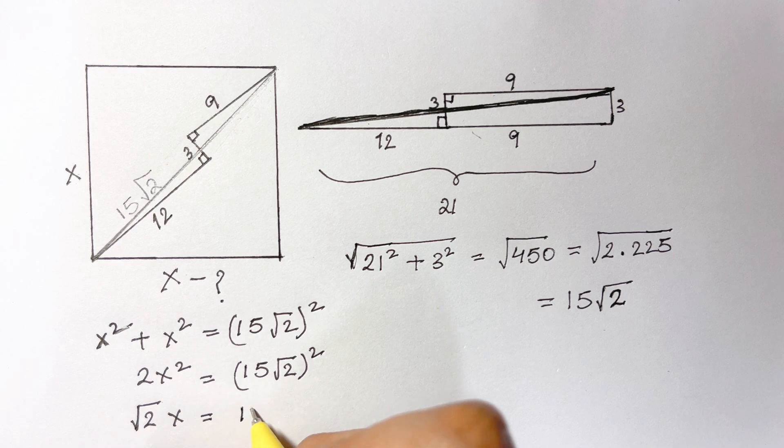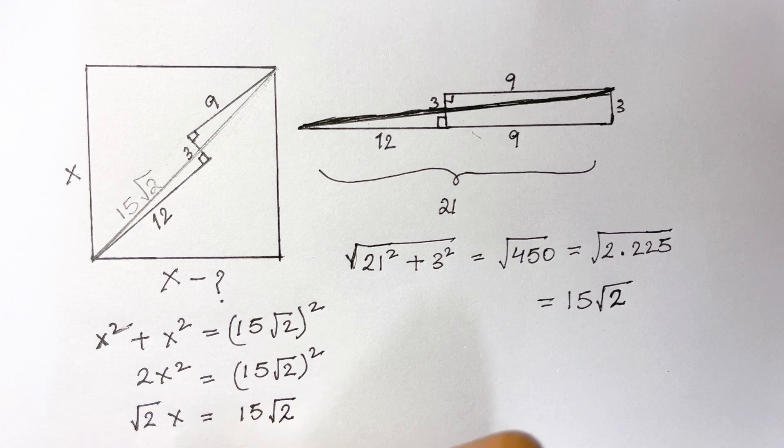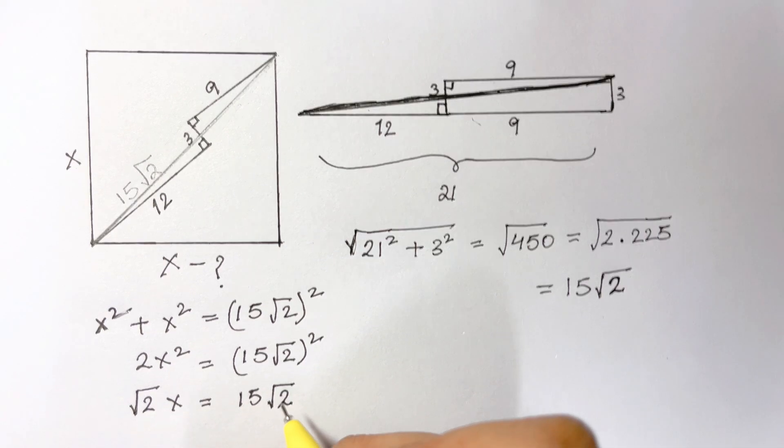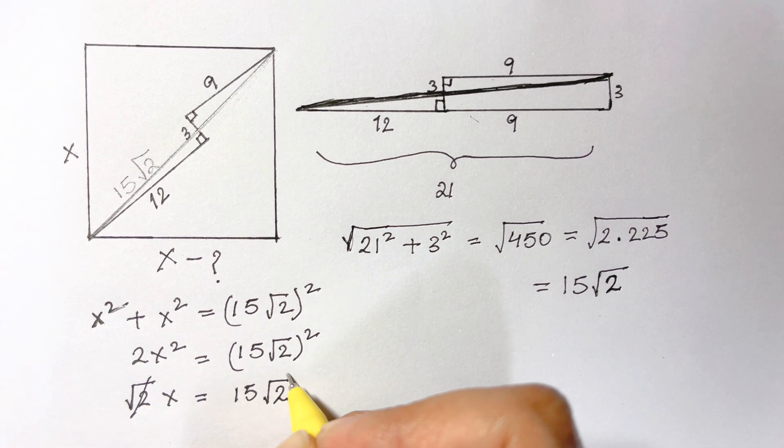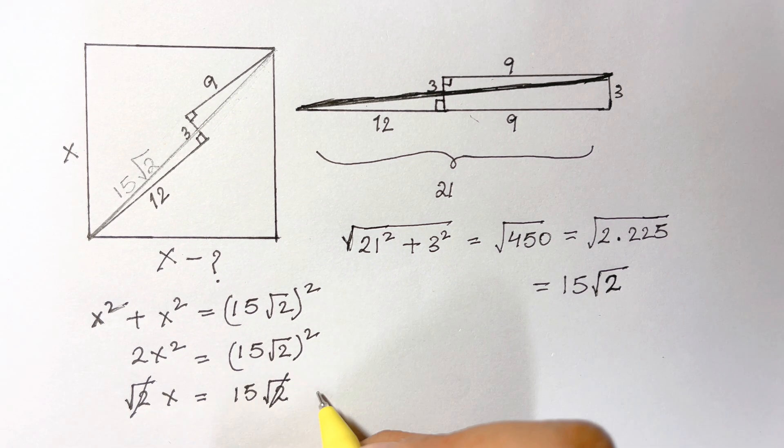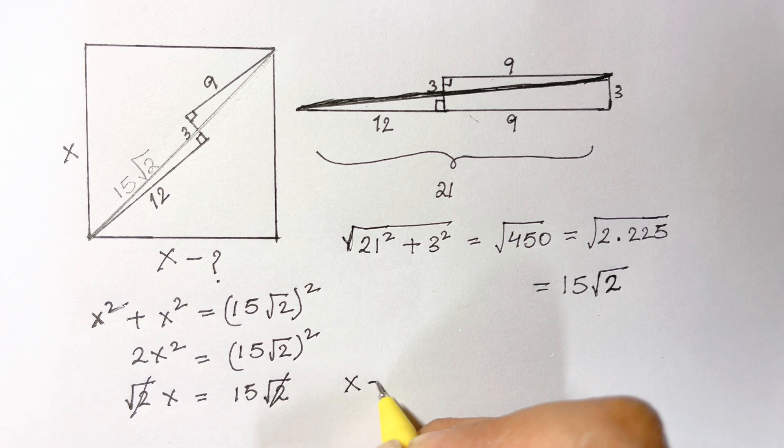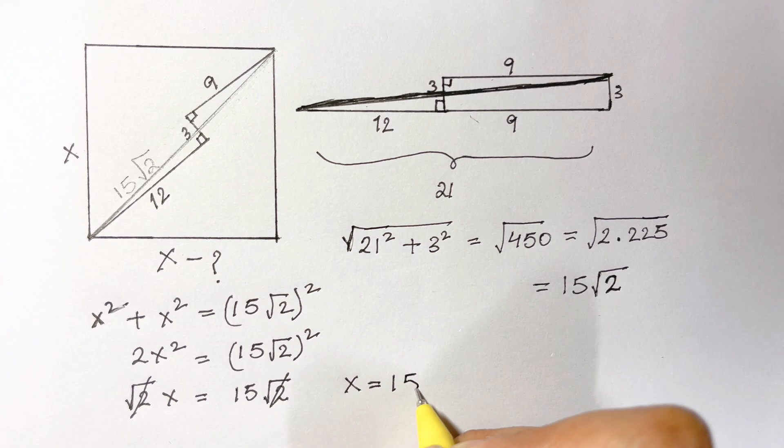√2 and √2 gets cancelled, so you're left with x is equal to 15.